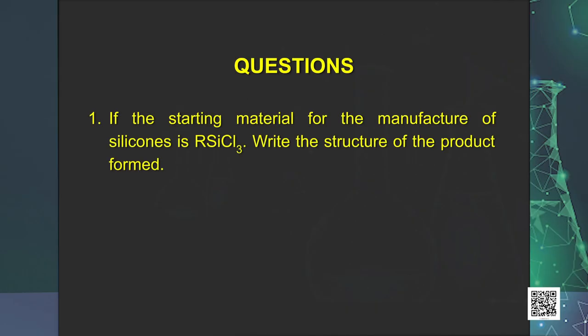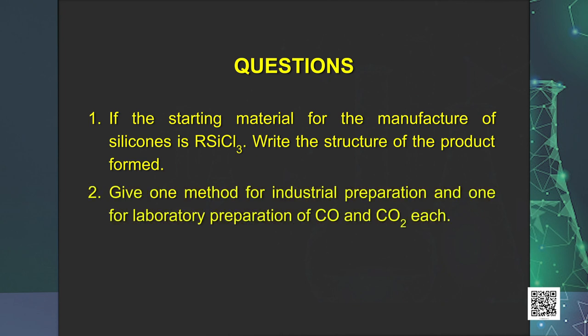As we end our session, try to solve the following questions. If the starting material for the manufacture of silicones is R-SiCl3, write the structure of the product formed. The next question is, give one method for industrial preparation and one for laboratory preparation of CO and CO2 each.